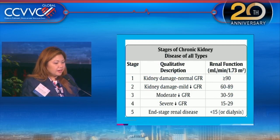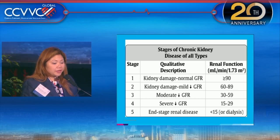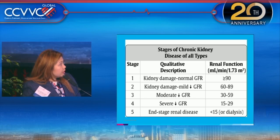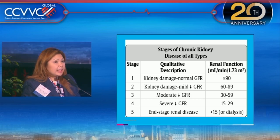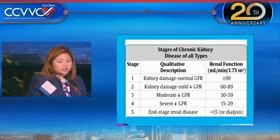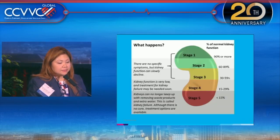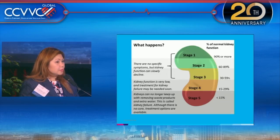These are the GFR stages of chronic kidney disease. Stage 1 is normal GFR greater than 90 milliliters per minute per 1.73 meters squared. Stage 2 is GFR 60 to 89. Stage 3 moderate is 30 to 59, and severe stage 4 is 15 to 29. Stage 5 is end-stage renal disease requiring dialysis — and that is exactly what we are trying to prevent.